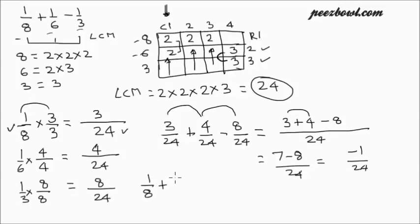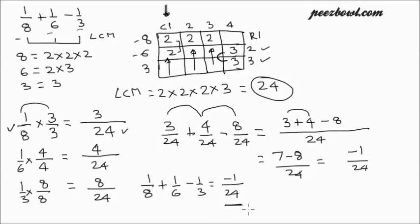So finally, 1 upon 8 added with 1 upon 6 minus 1 upon 3 gives the final result: minus 1 upon 24. This is the answer.